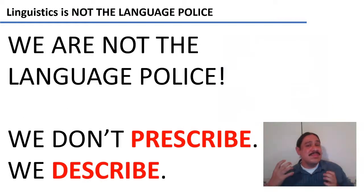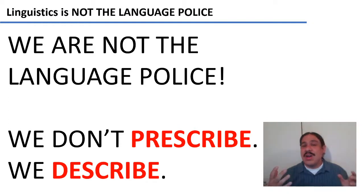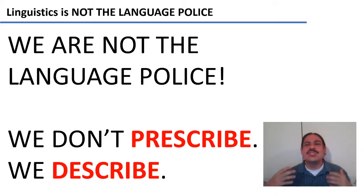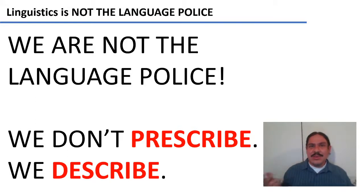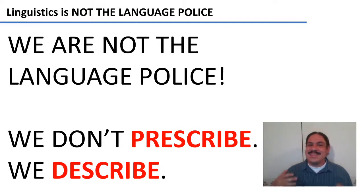And most importantly, we are not the language police. We do not prescribe. We don't tell people that this is right or wrong — we describe what people are doing with language. Imagine if you did that with any other natural phenomenon. If you looked at grass and told grass, you're growing wrong. Or if you studied fish, only to tell a few of those fish, you're swimming wrong, you should be swimming some other way. That is not what linguistics does. We try to describe the patterns we find in human language.